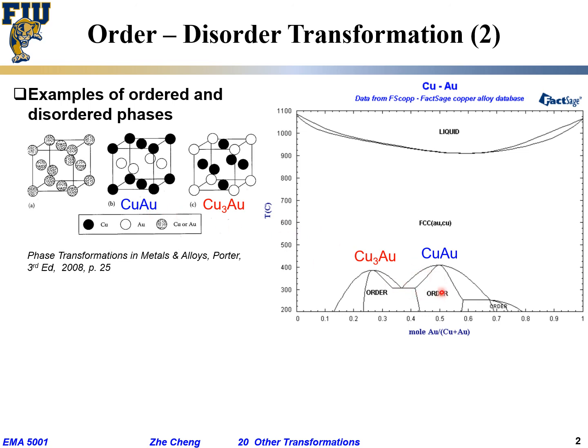The other one is similar. If I have 75% copper, 25% gold - if I'm at 600°C, I'm completely disordered. But when I cool to below 400°C temperature at equilibrium, it becomes ordered. This type of phase transformation people call the order-disorder phase transformation.